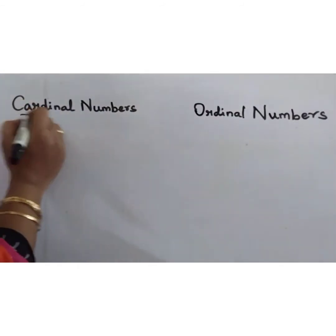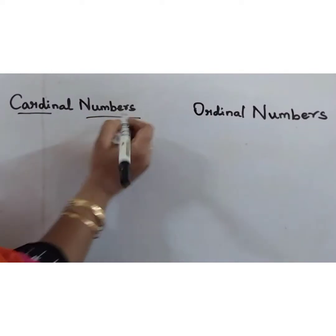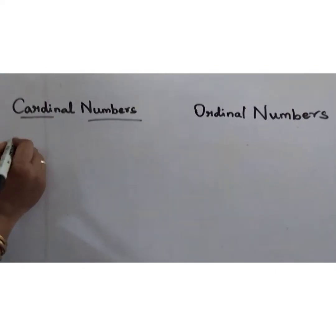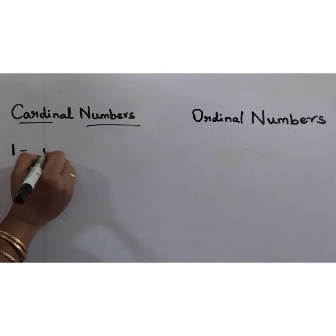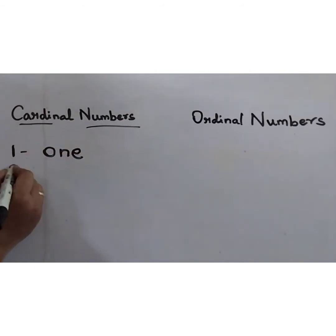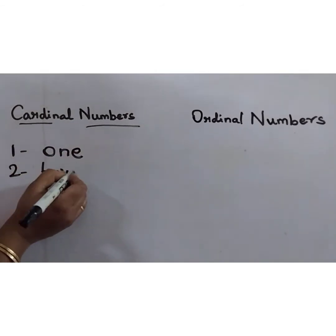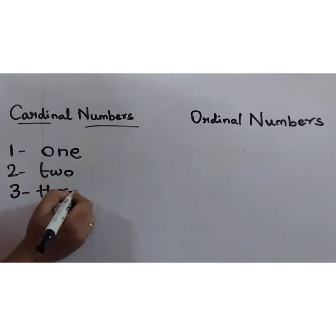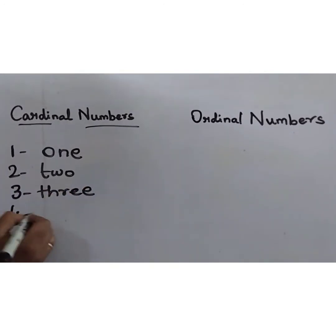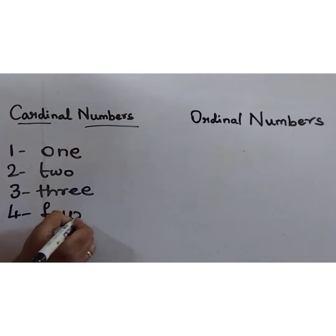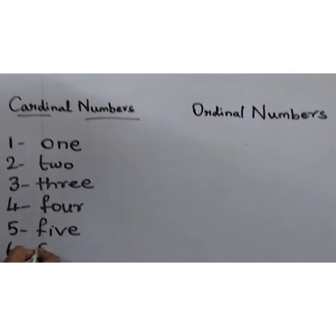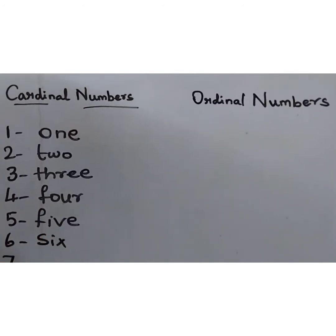Let's see the cardinal numbers. We know these cardinal numbers already — that is a number used to count and write. 1 — ONE. 2 — TWO. 3 — THREE. 4 — FOUR. 5 — FIVE. 6 — SIX.